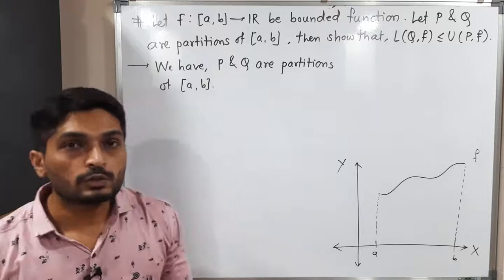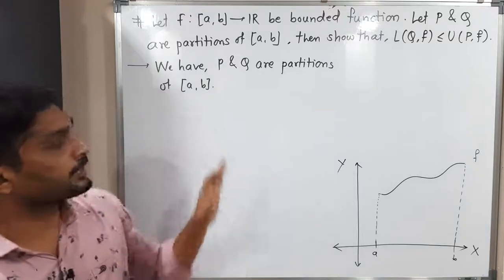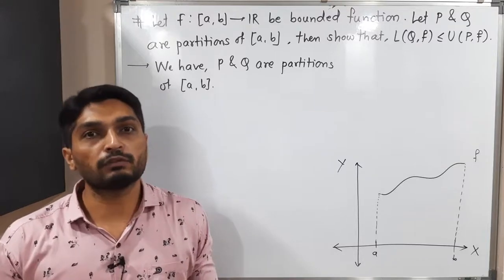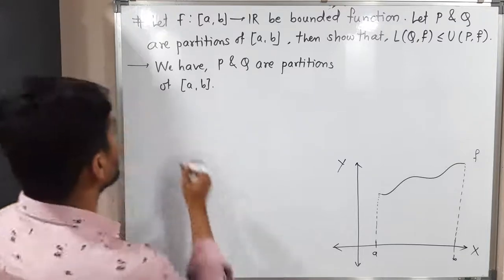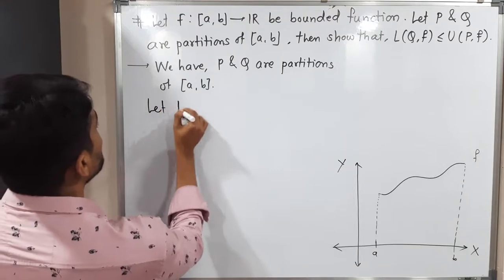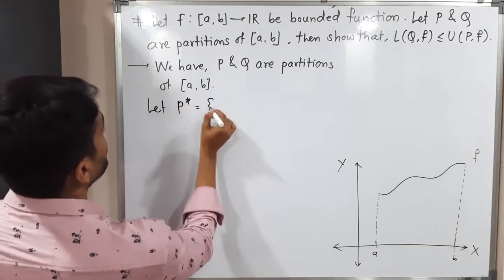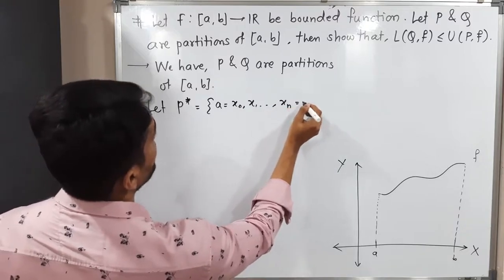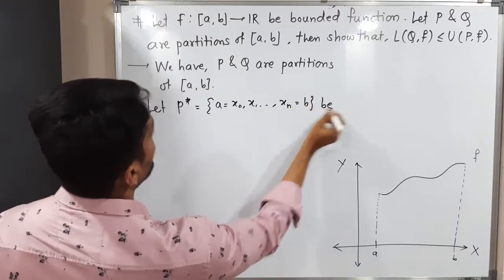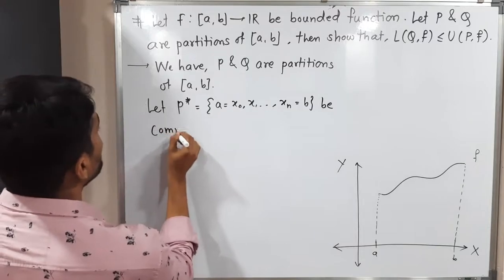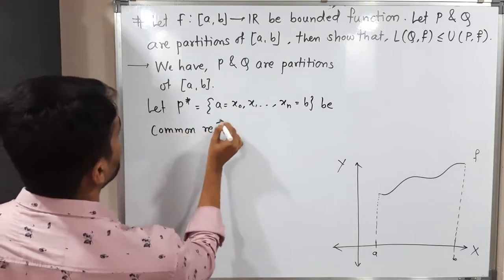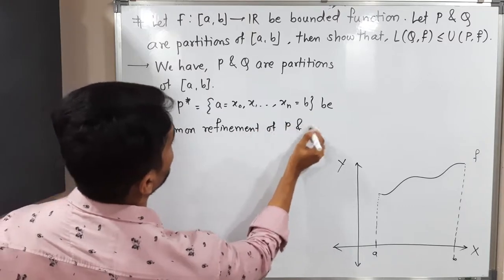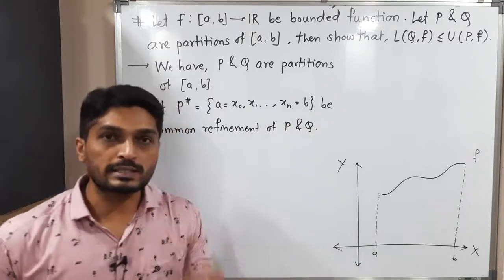P and Q are partitions of closed interval [a, b]. What I will do is take a common refinement of both partitions. Let P* = {a = x₀, x₁, ..., xₙ = b} be the common refinement of P and Q. We will discuss one example so you can easily understand what common refinement means.